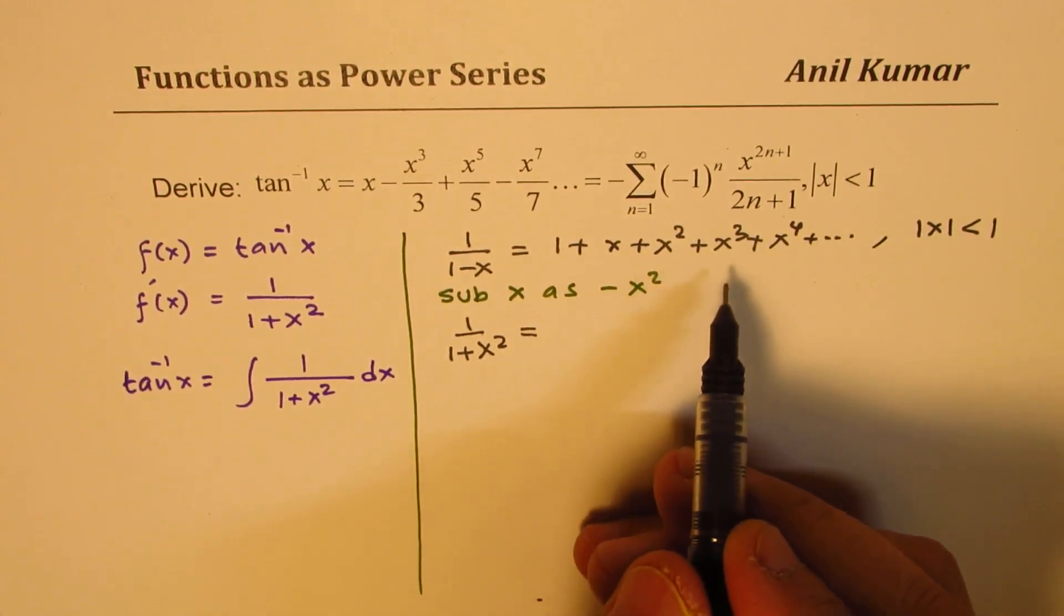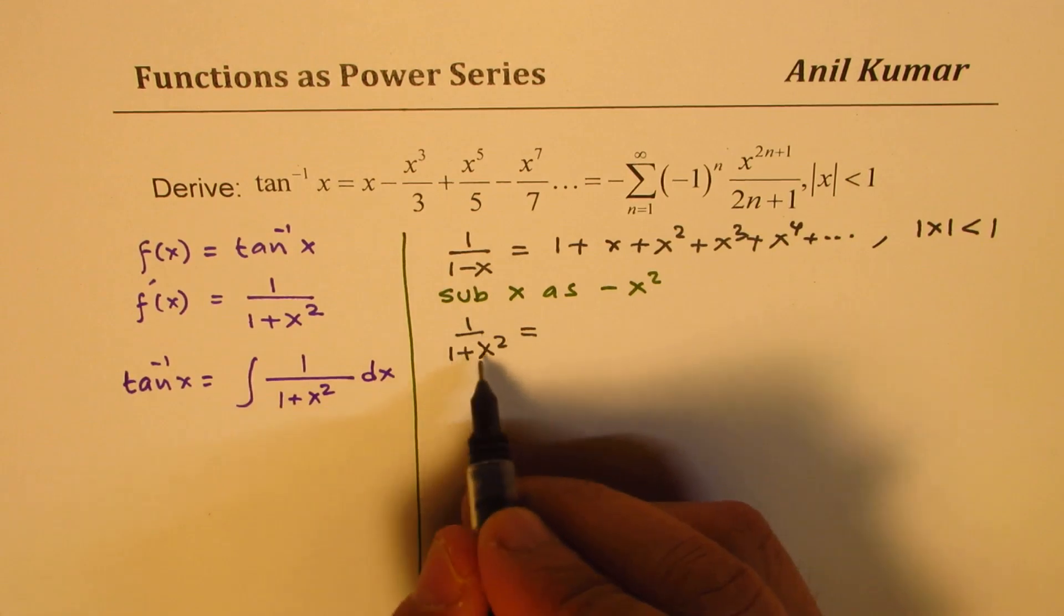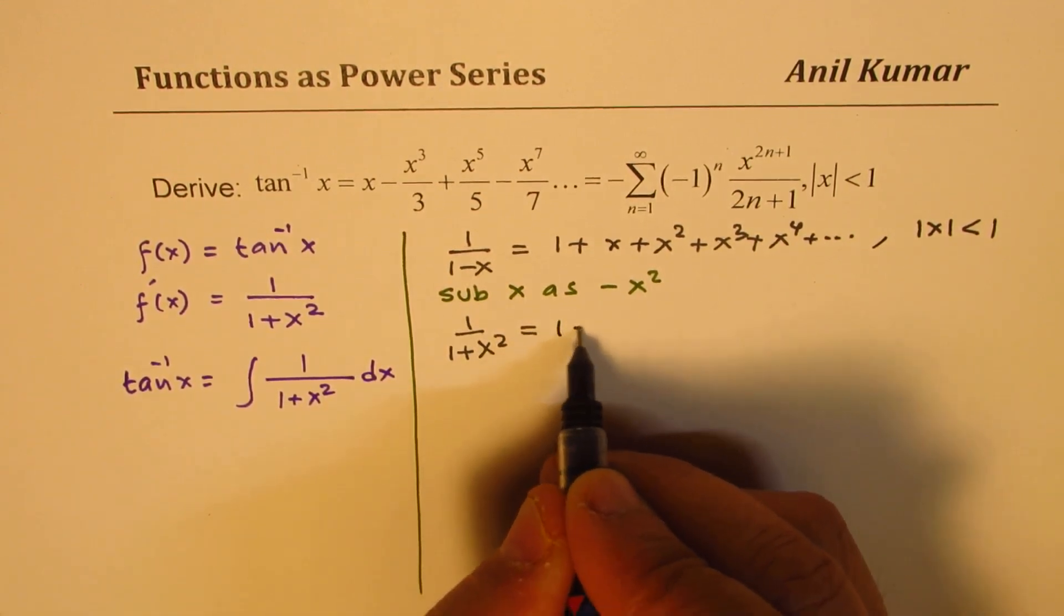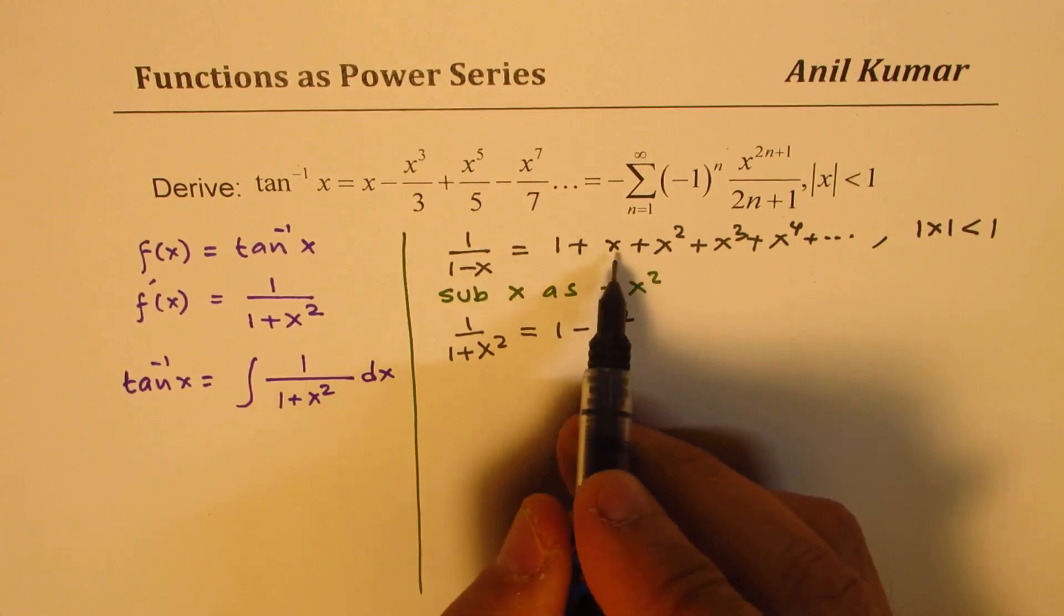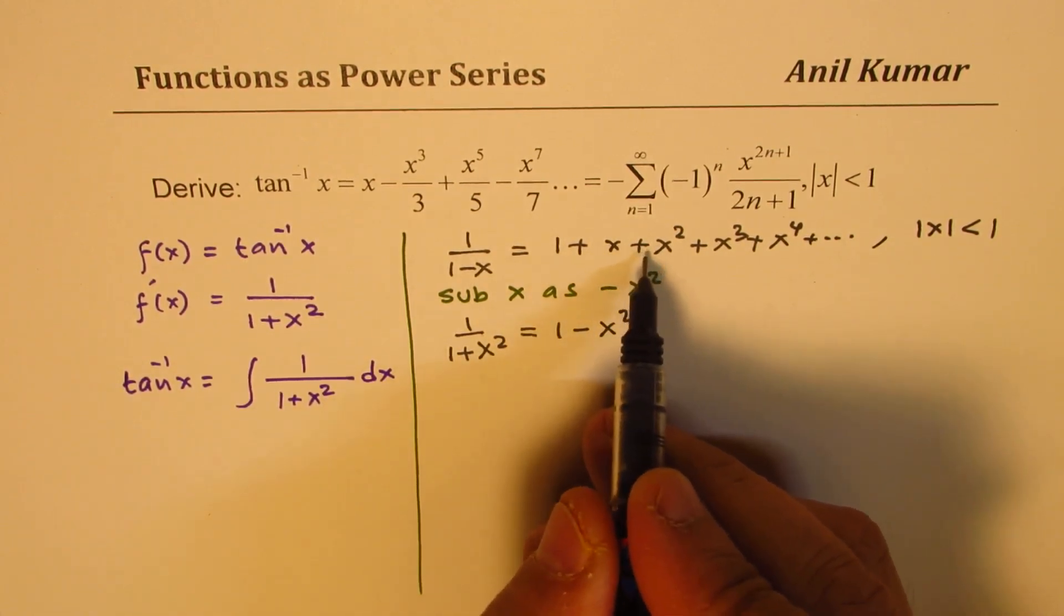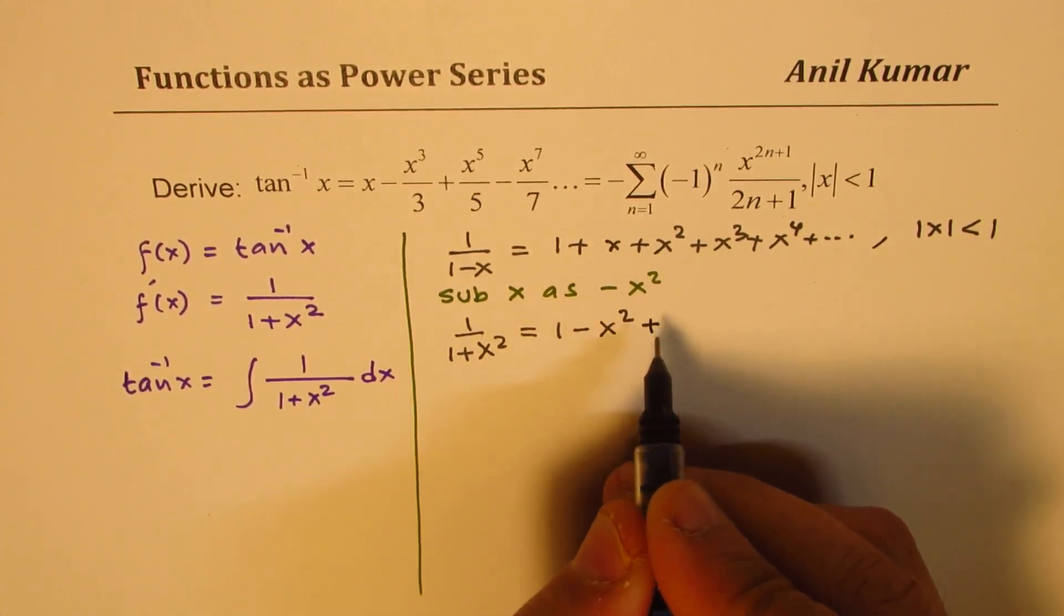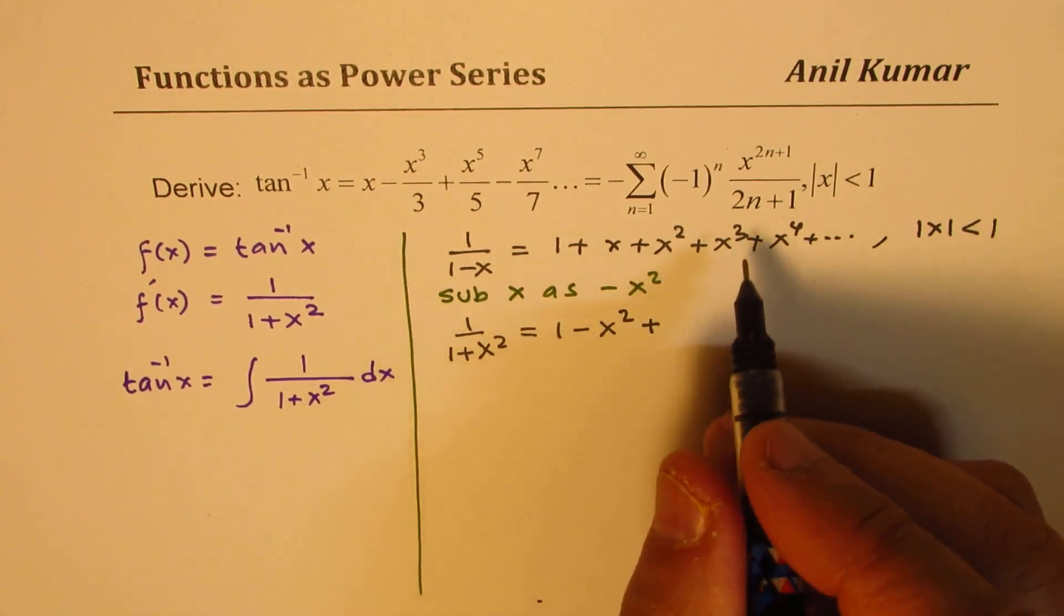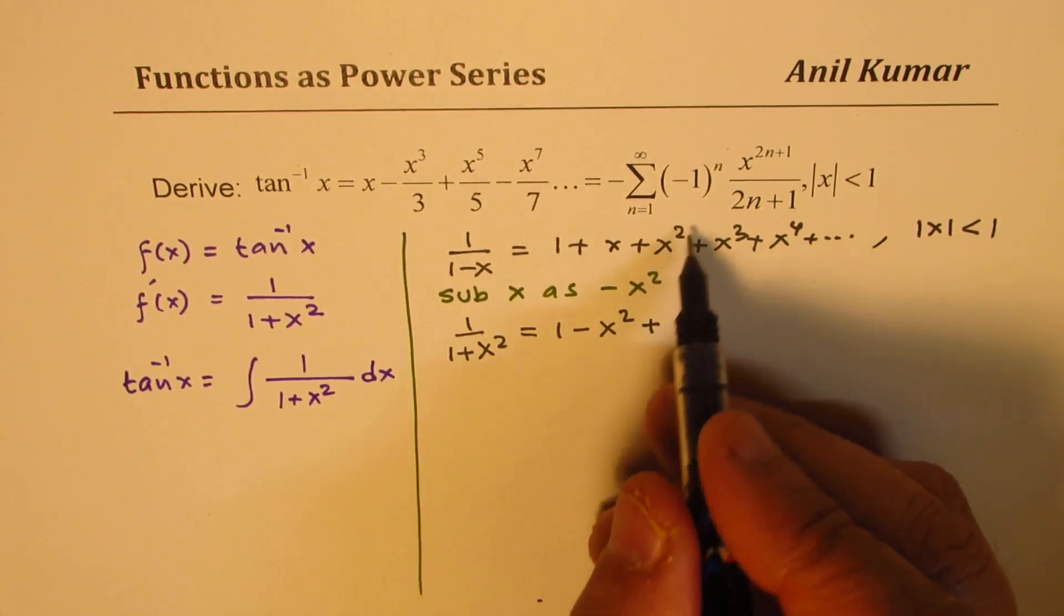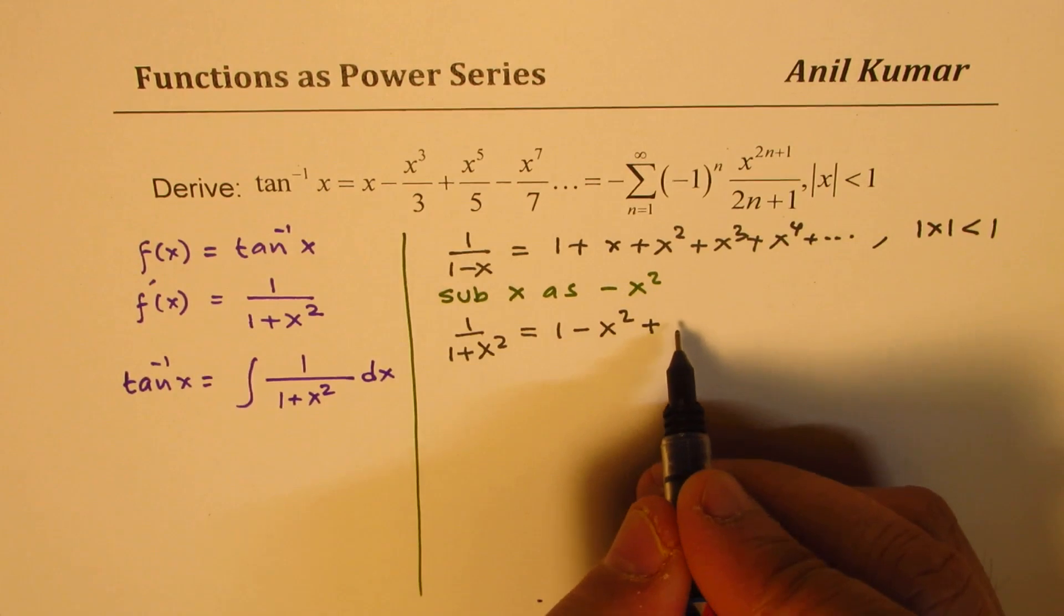So you get a series which is one over one plus x squared, now equal to one minus x squared. So I'm replacing this with minus x squared, so alternate plus and minus signs we are going to get, and the powers will all become even.